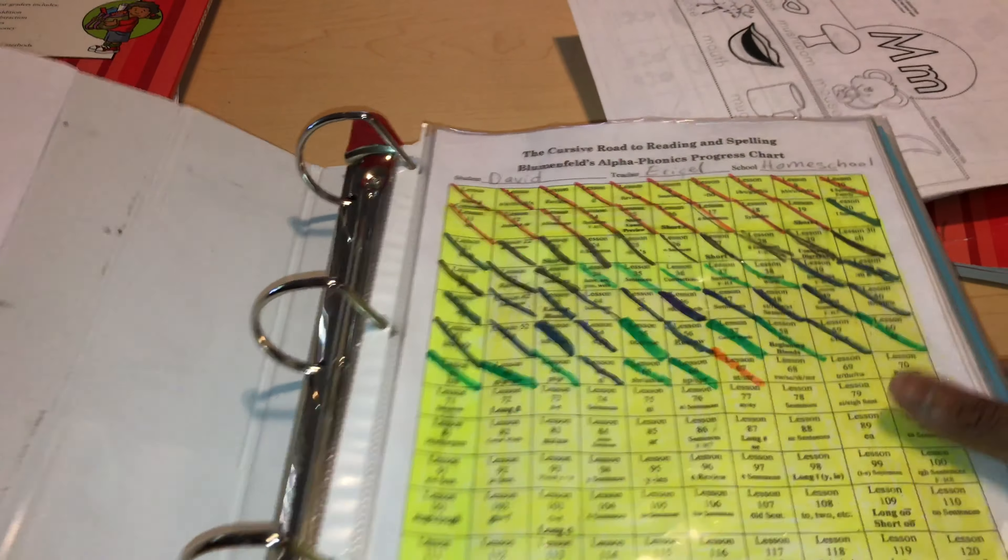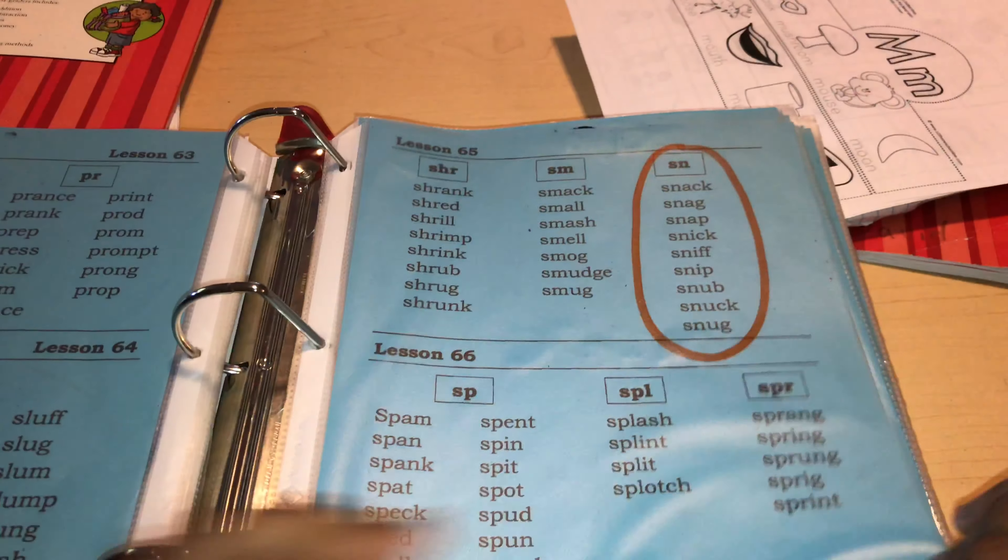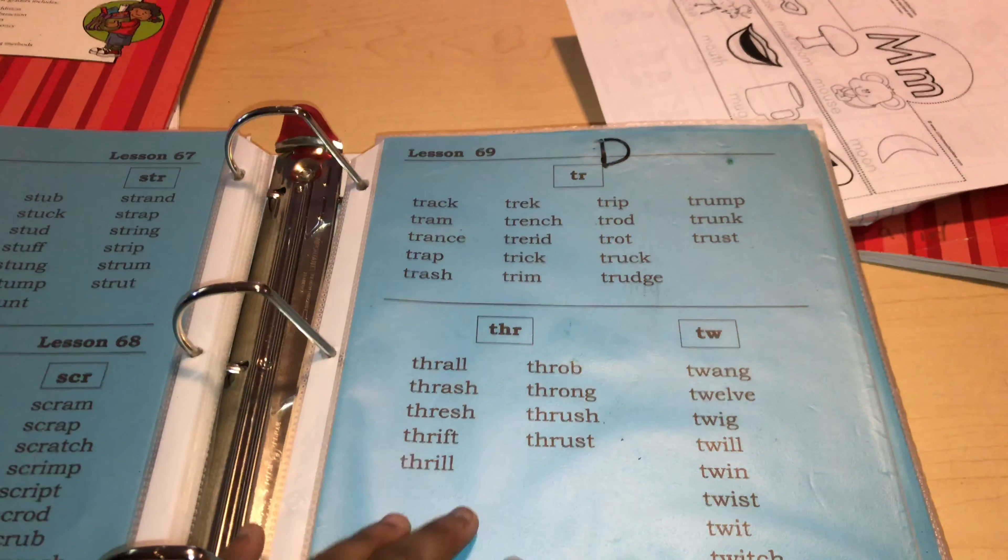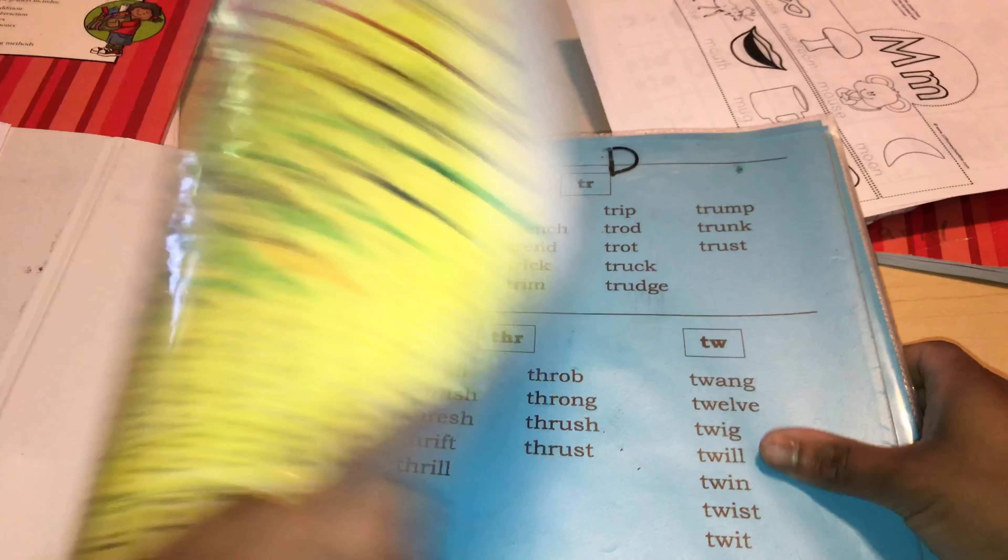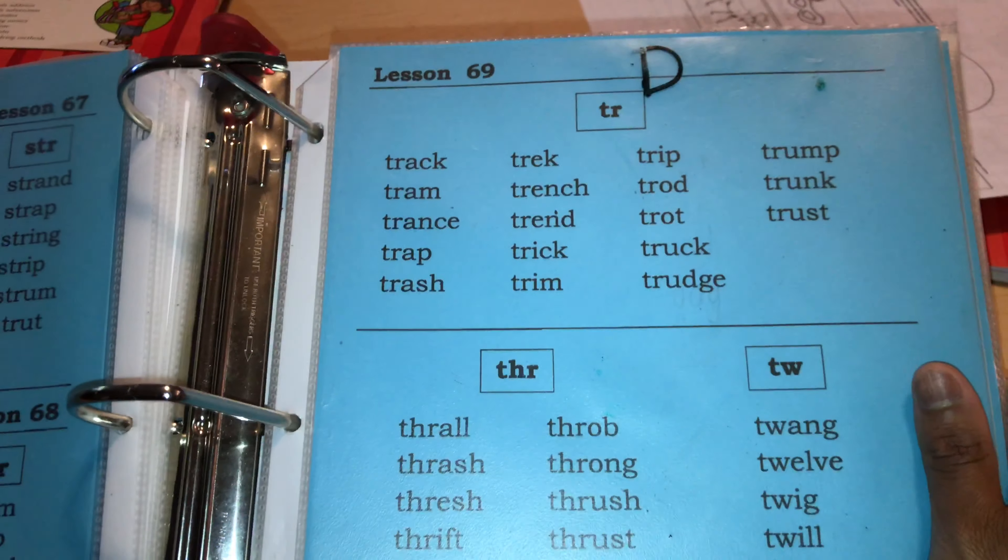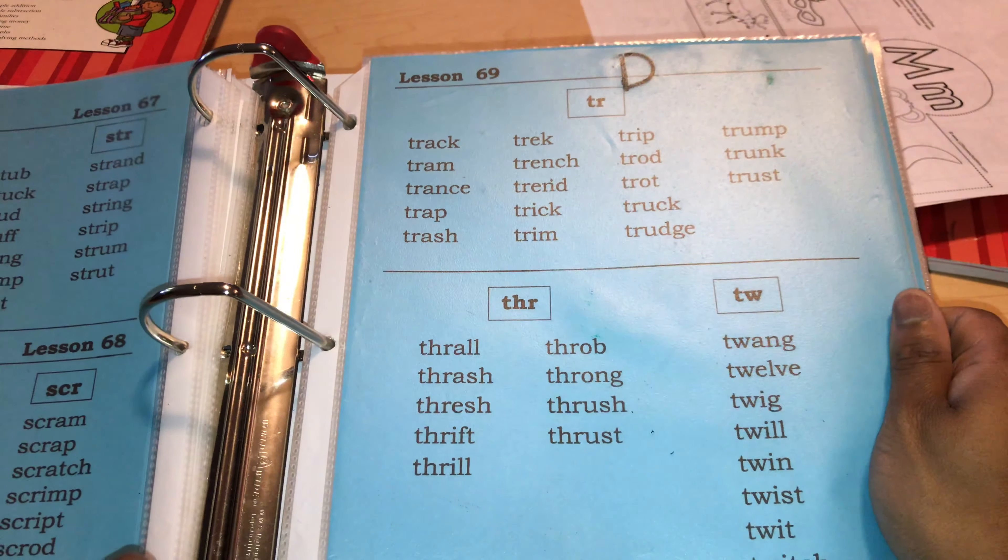For reading, he's in lesson 68, and I'll show you what that looks like. Oh, this is what he's going to be doing for copy work. And this is lesson, did I say 68? I meant 69. I did not cross that out. I apologize. So he's going to be working on lesson 69.